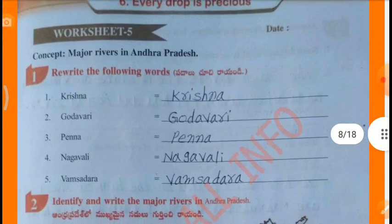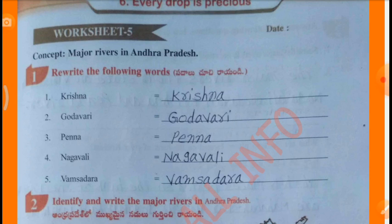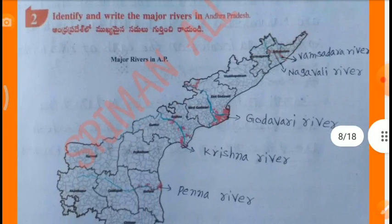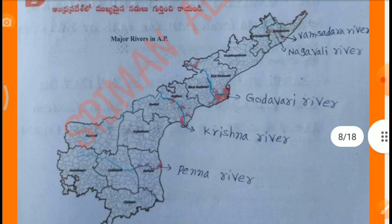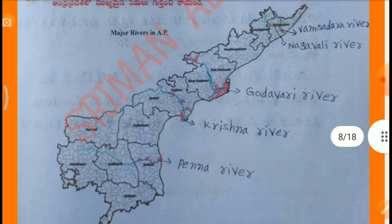Worksheet 5, Concept: Major Rivers in Andhra Pradesh. Relate the following: Krishna, Godavari, Penna, Nagavali, Vamsadhara. Identify and write the major rivers: First one, Vamsadhara river; Second one, Nagavali river; Third one, Godavari river; Fourth one, Krishna river; Fifth one, Penna river.